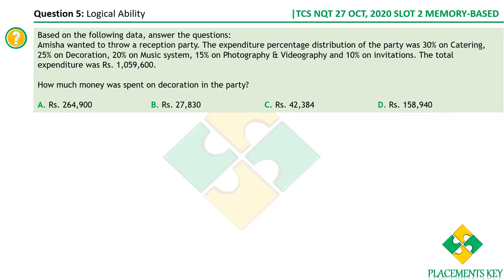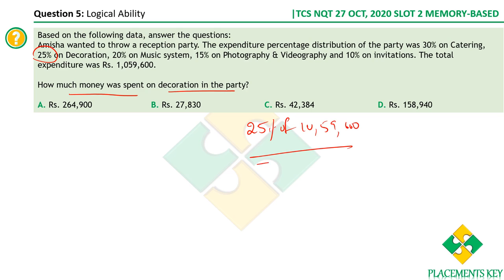From the same data set, how much was spent on decoration? Decoration accounts for 25% of the total expenditure. We just calculated 25% of 10,59,600, which comes to around 2,65,000, so again option A is the right answer.